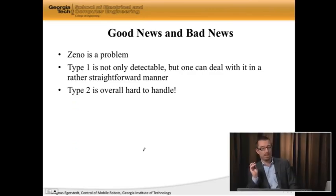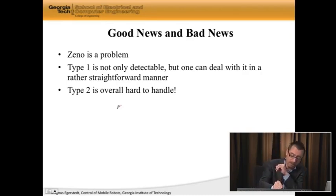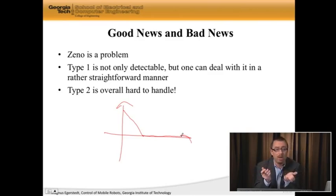So, there are some good news and bad news in all this rather messy switching situation. The bad news is that Zeno is a problem, as we've seen. However, type 1, which is arguably the more common type, is not only detectable. I mean, it's easy to see if you're going to end up in a situation where you're going to switch infinitely many times at a single time instant. But the other good news about type 1 is that we can actually deal with it. Because, you know what, what should this system do? It should go down to 0 and then it should stay at 0. It's clear that that's what we want the system to do. And in fact, you can do that as we will see in the next lecture.